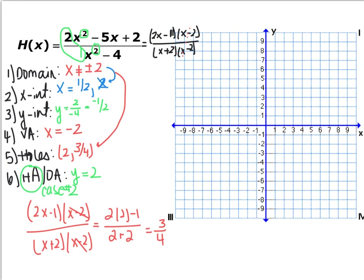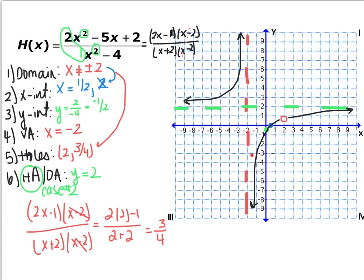Now graph all this information. We have the x-intercept at positive 1/2, the y-intercept at negative 1/2, the vertical asymptote at x equals negative 2, the hole at the point (2, 3/4), and the horizontal asymptote at y equals 2. Down here the curve has to go through these points following the asymptotes. The reason the other branch is above the horizontal asymptote is because there's no x-intercept there, so the curve can't cross the x-axis.